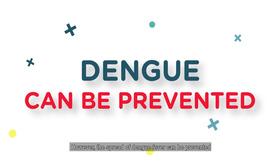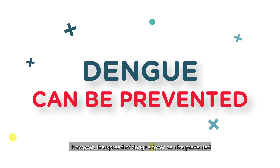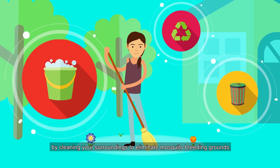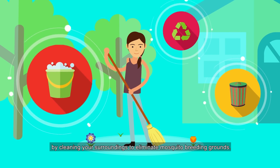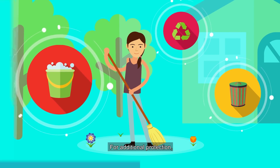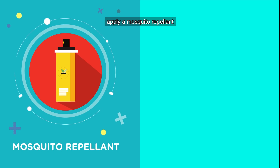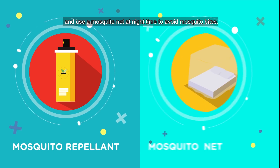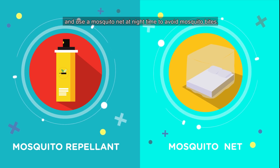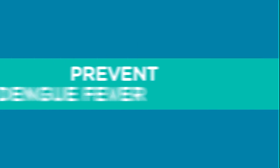However, the spread of dengue fever can be prevented by cleaning your surroundings to eliminate mosquito breeding grounds. For additional protection, apply mosquito repellent and use a mosquito net at nighttime to avoid mosquito bites.